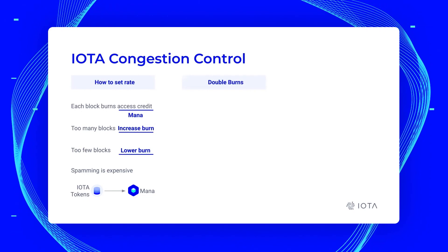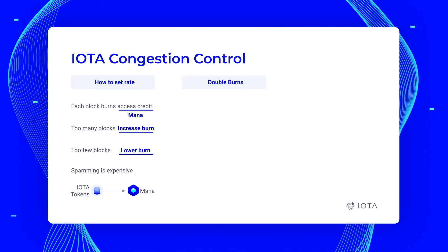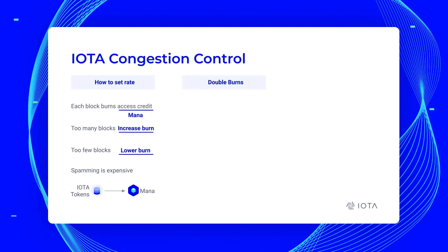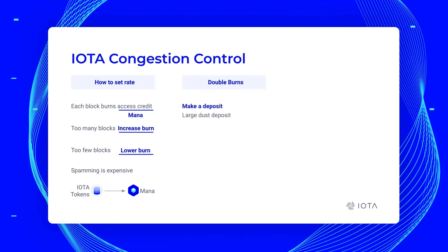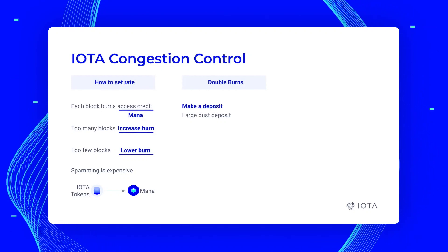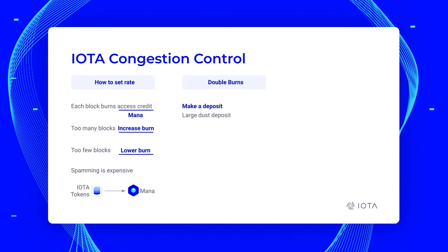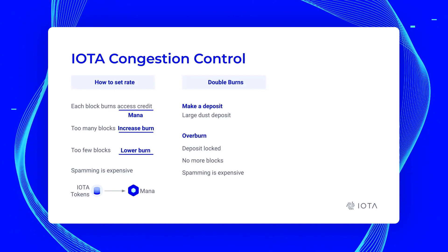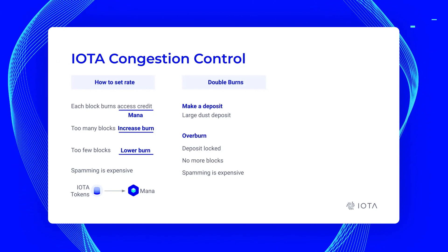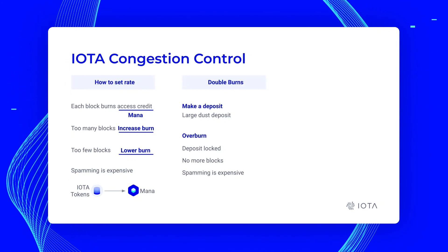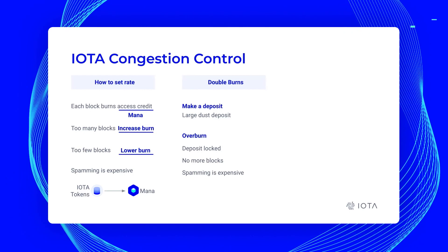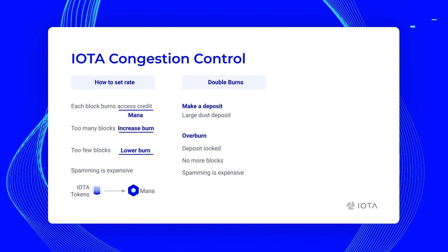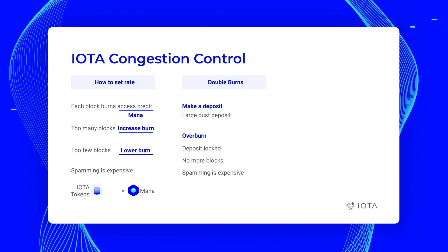How do we solve the double burning problem? What happens if someone tries to burn mana twice or burns too much? This is very similar to the traditional double spending problem, except it's about congestion control. What we do is have every user who wants to create blocks put down a deposit — basically a large dust deposit. If you overburn, this deposit becomes locked and you can't issue any more blocks. This is another way spamming becomes expensive: if you try to spam by overburning, your deposit gets locked, then you have to create another deposit, and that gets locked too.